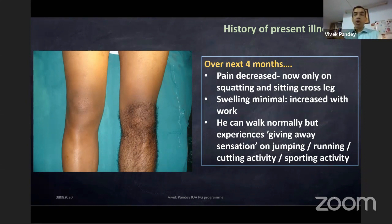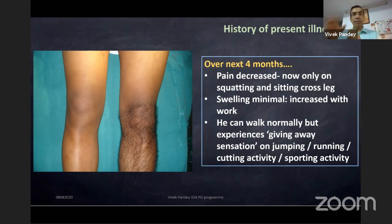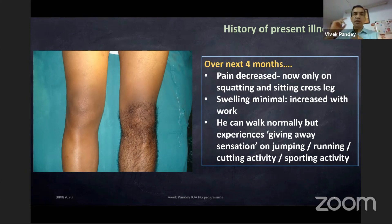Over the next four months, pain decreased and is now only on squatting and sitting cross-legged. Swelling is minimal and only increases with work. He can walk normally but experiences giving way on jumping, running, cutting activity, or sport. Only when demand from the knee is high — pivoting activity — does instability come. Flat ground walk is perfectly normal.